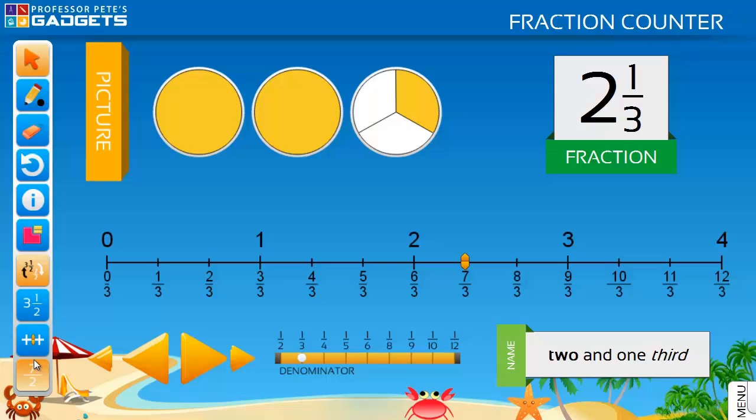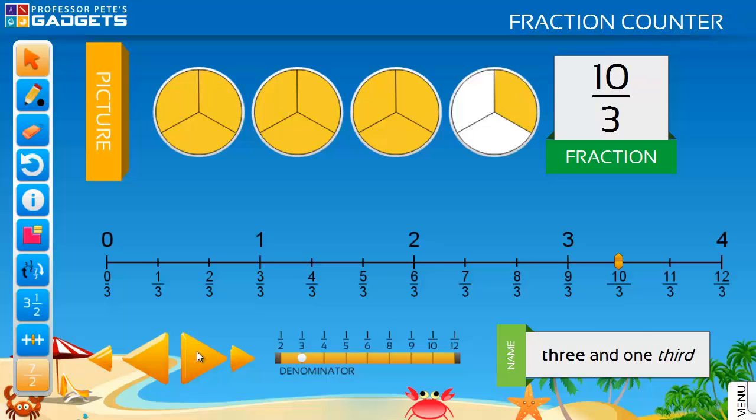Students can count in improper fractions using the mixed number to improper fraction tool to switch between them. Notice how the shapes change too, with improper fractions shown so that the whole numbers are cut up into fractional parts. That way they can be counted.